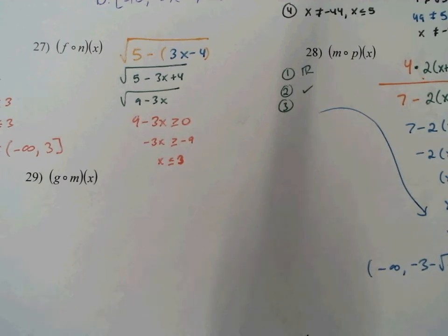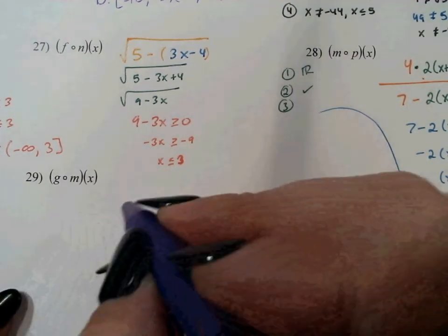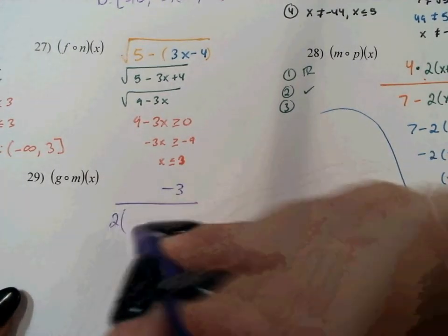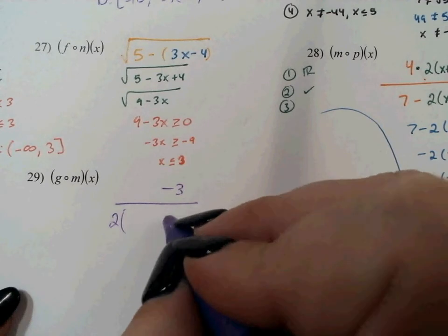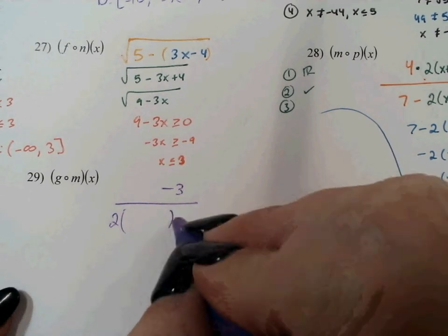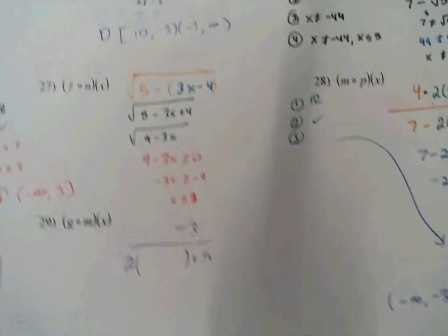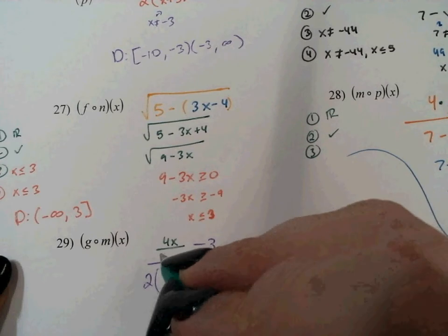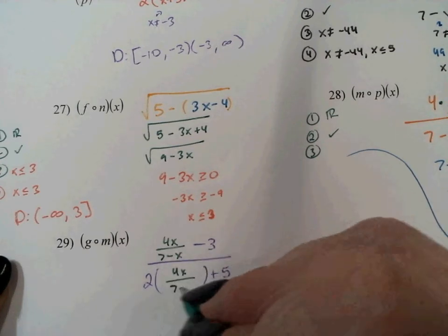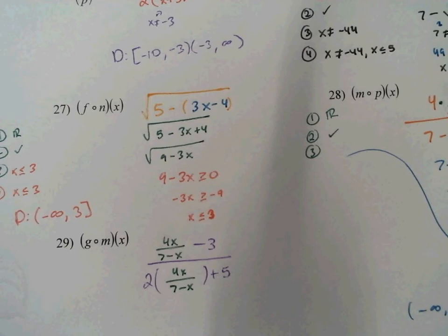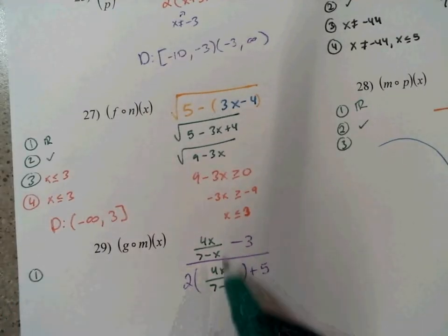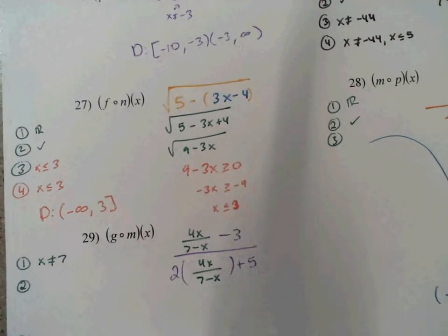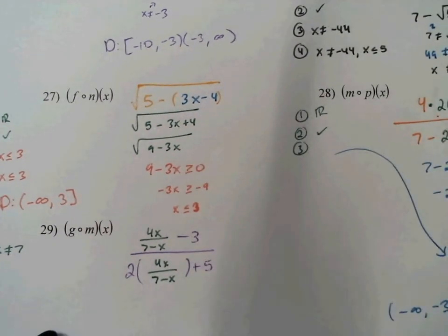G of m. G is the function: something minus 3, over 2 times something plus 5. That something is m of x: 4x over 7 minus x. Step 1: domain of the interior — x cannot equal 7. Step 2: perform the composition and simplify.